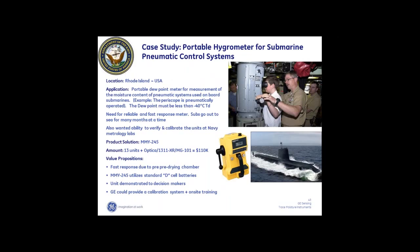Here's a case study: the US Navy uses these on submarines. Submarines go out for months at a time and have a lot of pneumatic controls — the periscope is pneumatically actuated. They have to make sure that dew points are below a certain level. They like the fact that the portable is battery operated and has fast response.